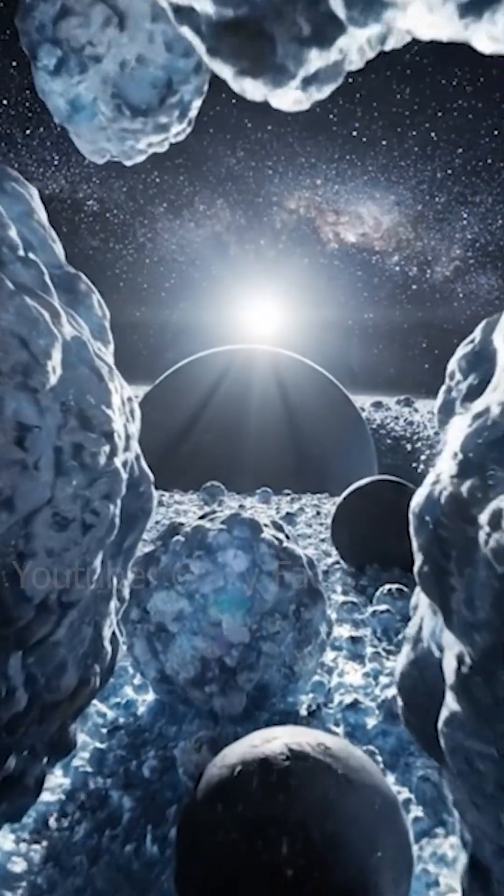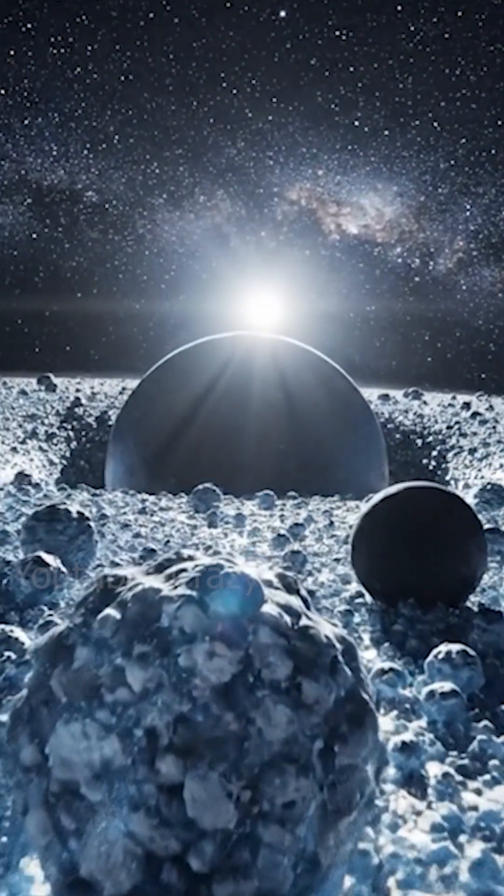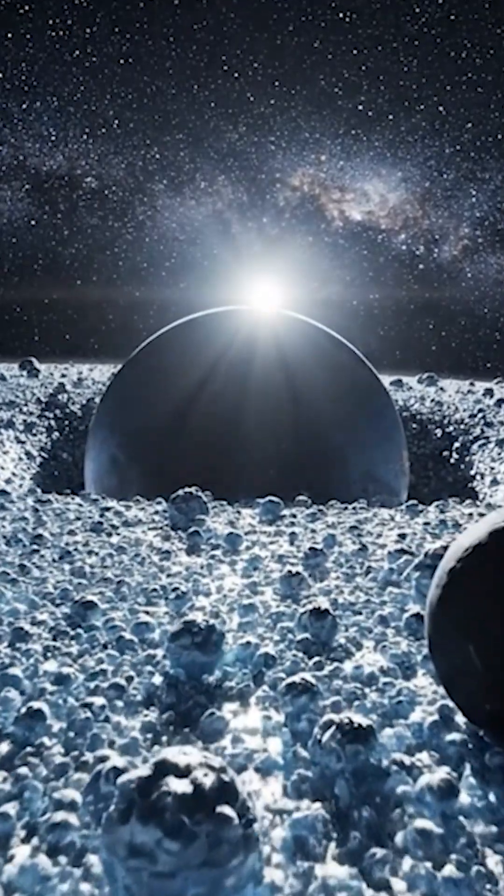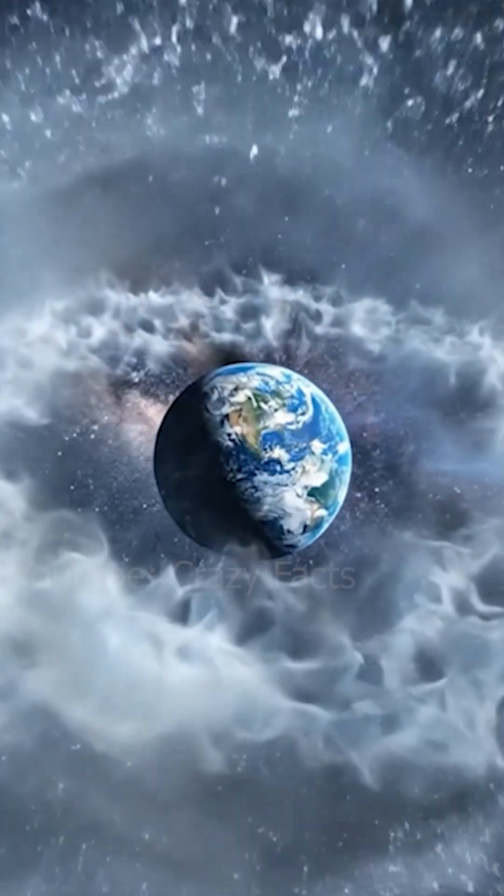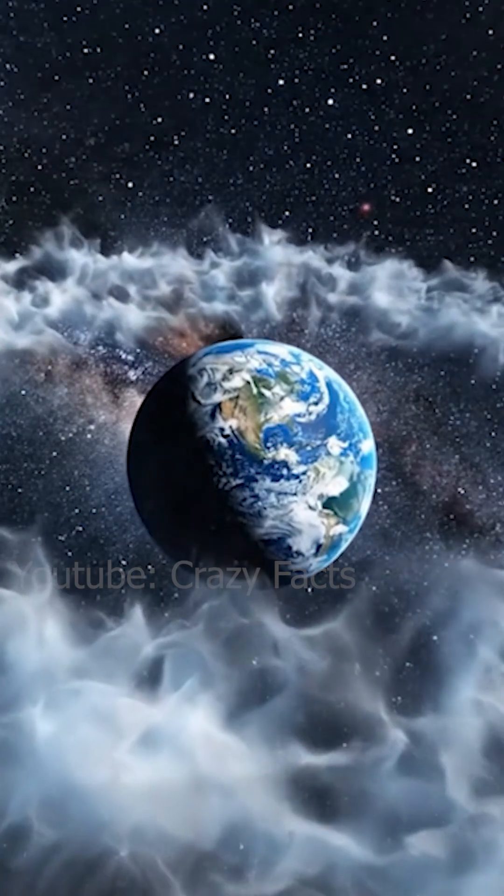At the very edge of our solar system lies a mysterious region known as the Oort cloud, a massive spherical shell composed of icy objects. It forms a natural boundary that encloses the entire solar system.